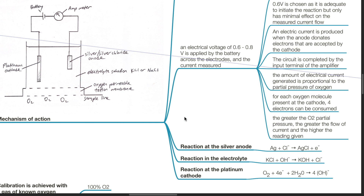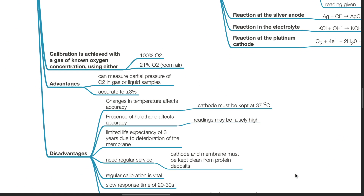Reaction at the silver anode: Ag + Cl⁻ → AgCl + e⁻. Reaction at the electrolyte: KCl + OH⁻ → KOH + Cl⁻. Calibration at the platinum cathode is achieved with a gas of known oxygen concentration, using either 100% oxygen or 21% oxygen (room air).